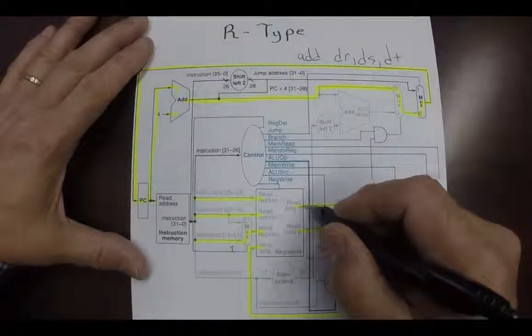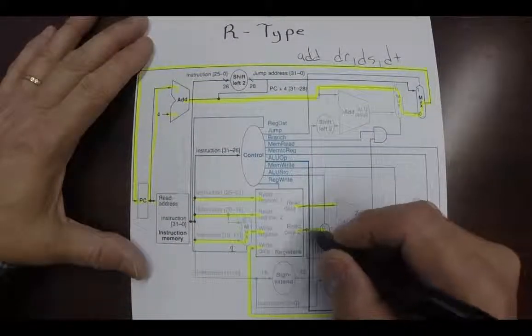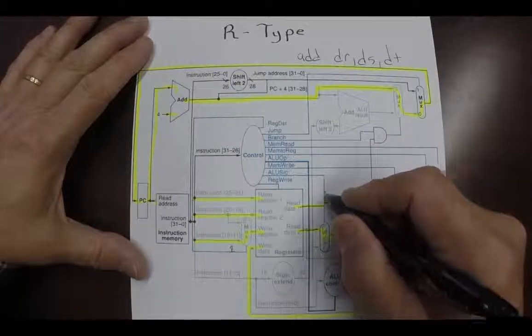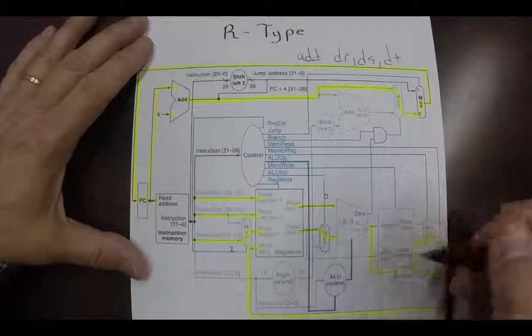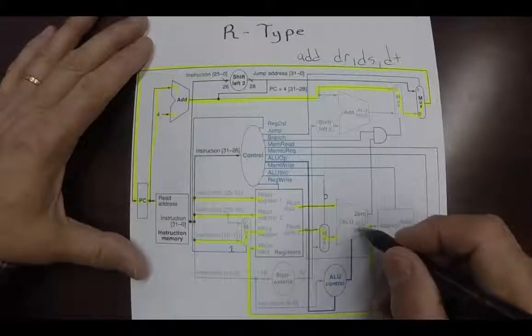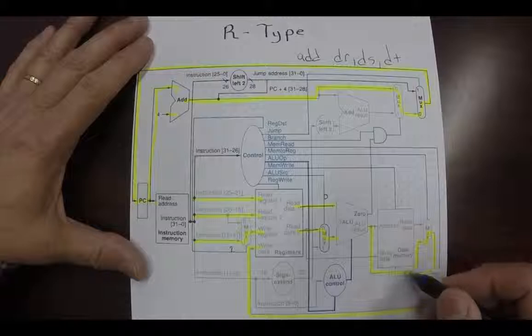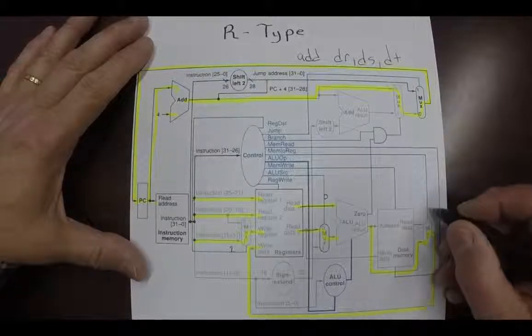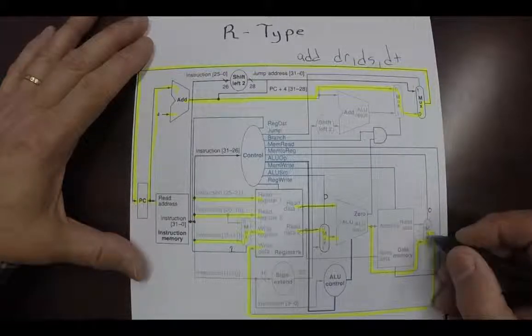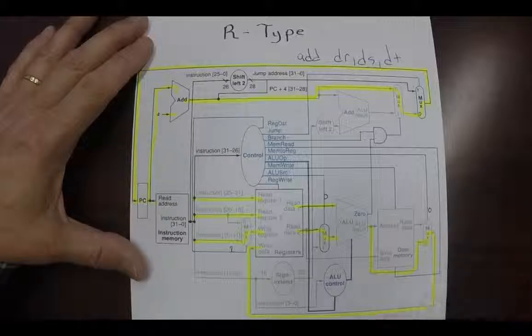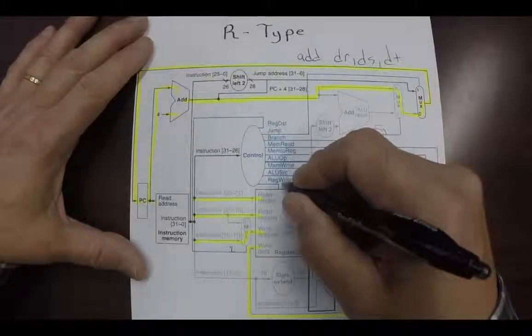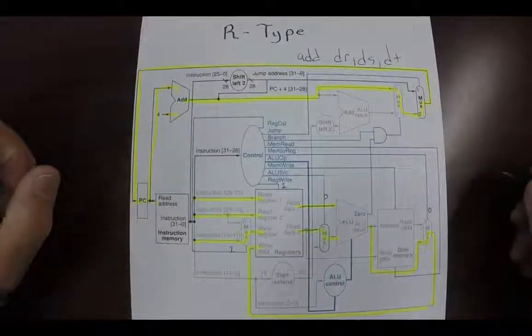Those two are passed through here, those two are passed through here into the arithmetic logic unit. This MUX right here is turned to 0, that tells it which source for the second operand. And of course the result is computed and sent out through the path right here into this MUX which is 0, which says take the output of the arithmetic logic unit and send it back to the register. The register write bit is turned on to 1 and that completes that cycle.